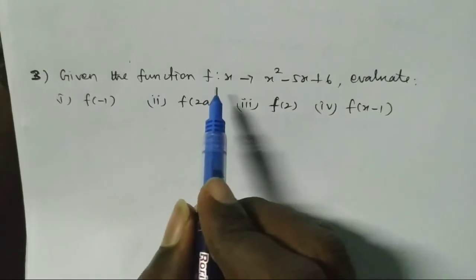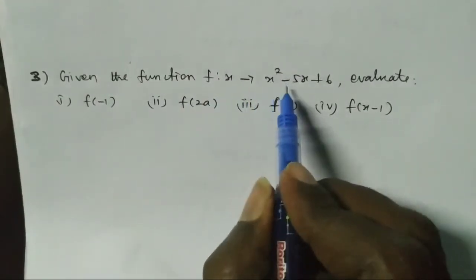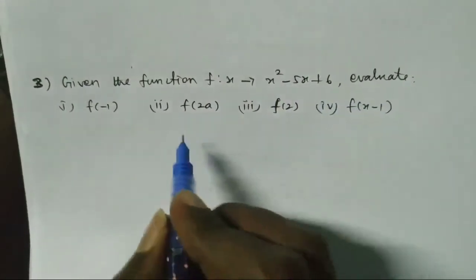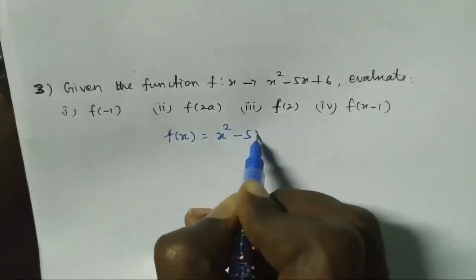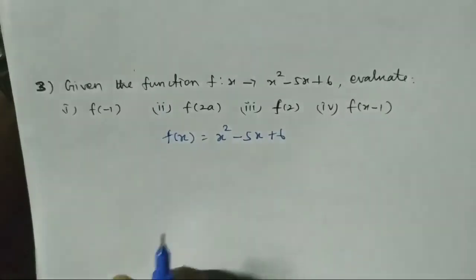Given the function f: x → x² - 5x + 6, evaluate: (i) f(-1), (ii) f(2a), (iii) f(2), (iv) f(x-1). So f(x) = x² - 5x + 6.